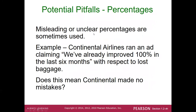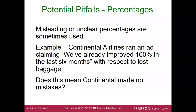Misleading percentages are also a concern. Continental Airlines ran an ad claiming they'd improved 100% in the last six months. When John Q. Public reads that, they get a very different perception — as if no mistakes were made whatsoever. In reality, it may only mean they improved 100% relative to lost baggage incidents. The perception when reading that statement is entirely different from what the number truly implies.